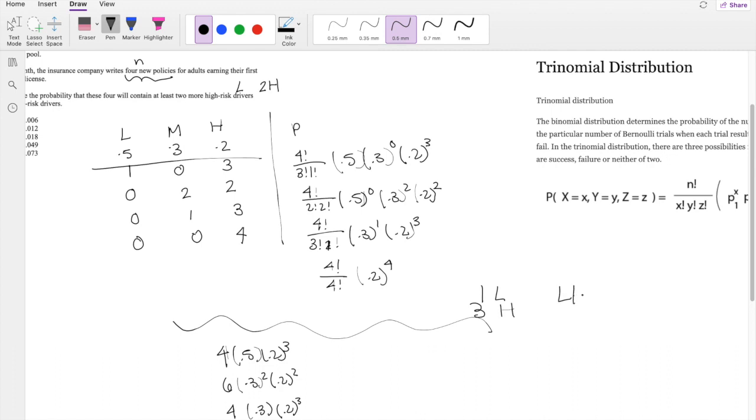Well, you can get low, high, high, high. High, low, high, high. High, high, low, high. Or high, high, high, low. So you'll eventually get that there's 4 choices.